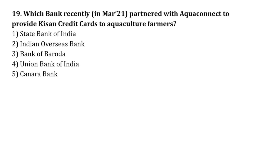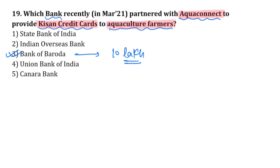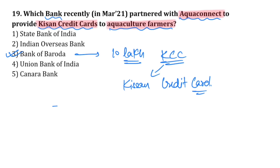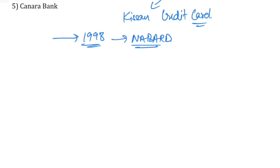Which bank recently partnered with Aqua Connect to provide Kisan Credit Cards to aquaculture farmers? The name of the bank is Bank of Baroda. They extended loans up to 10 lakh rupees under KCC — Kisan Credit Card, which was launched in 1998 by NABARD — National Bank for Agriculture and Rural Development.